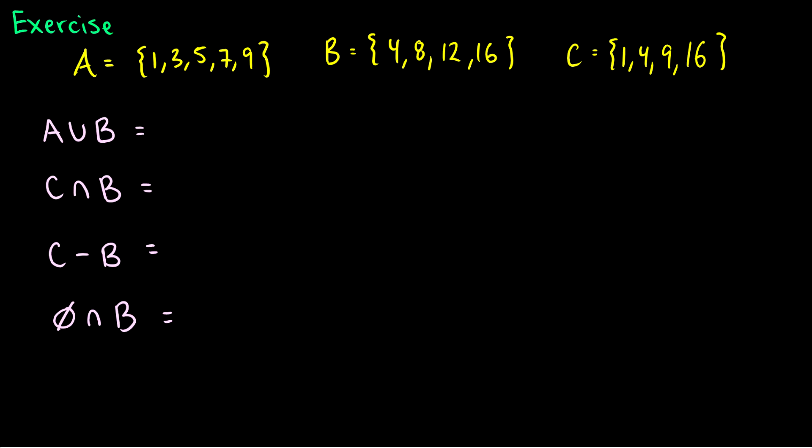If we want A union B, we just write out everything in A, 1, 3, 5, 7, and 9, and then we write out everything in B, 4, 8, 12, and 16, and that is A union B. It is everything in A or B.